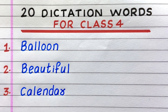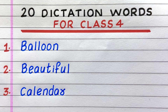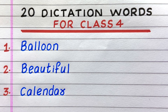First dictation word is balloon, spelling B-A-L-L-O-O-N. Second, beautiful, B-E-A-U-T-I-F-U-L. Third, calendar, C-A-L-E-N-D-A-R.